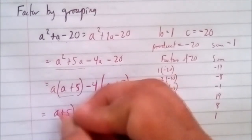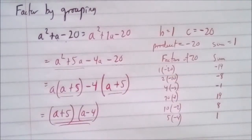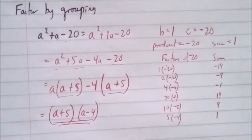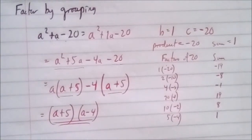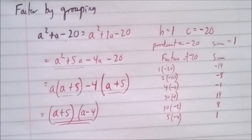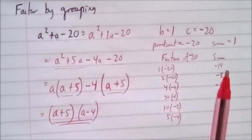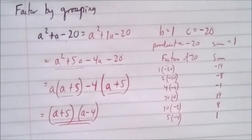Negative 4a divided by negative 4 gives positive a, and negative 20 divided by negative 4 gives positive 5. Both groups share the common factor a plus 5, so we write a plus 5 times a minus 4. That's our solution. Note: it doesn't matter if we put a minus 4 first or a plus 5 first — it still works out.